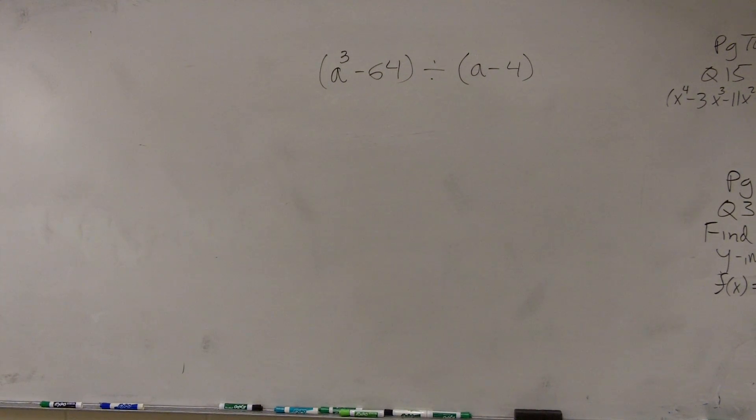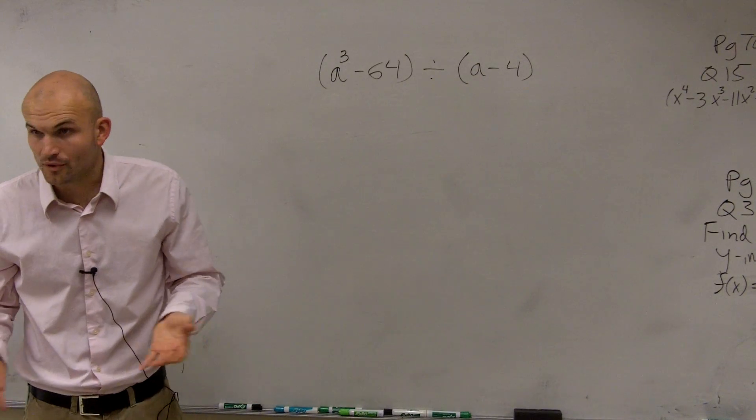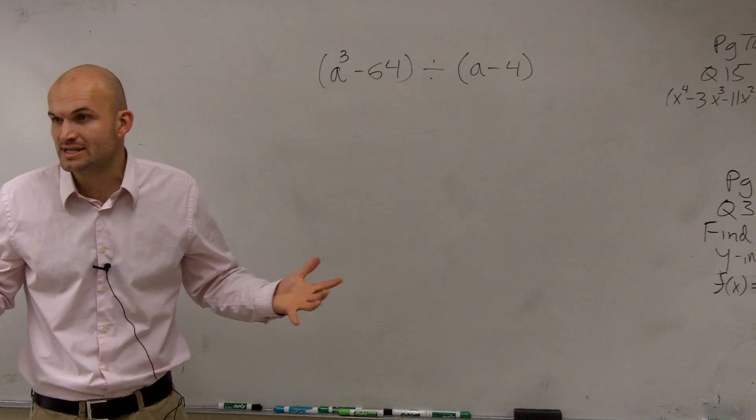So ladies and gentlemen, for this problem, we have a cubed minus 64 divided by a minus 4. So to do this by synthetic division, remember there's a couple of important steps.